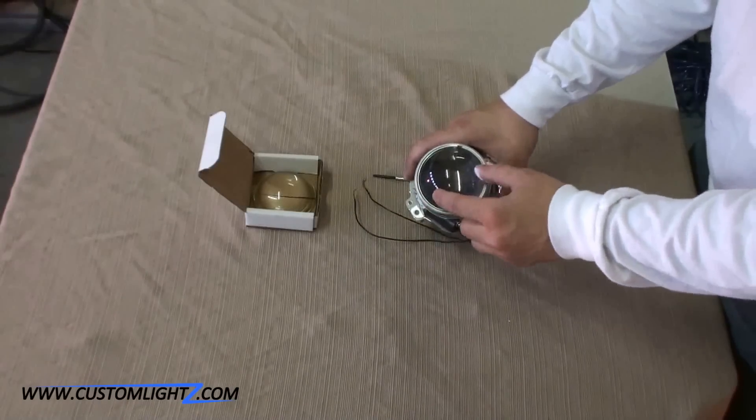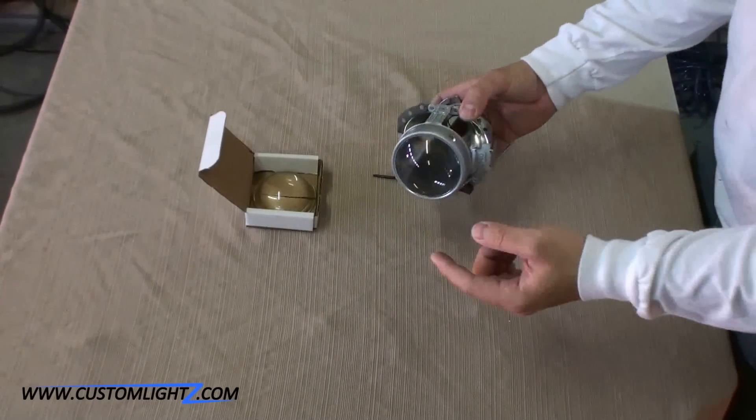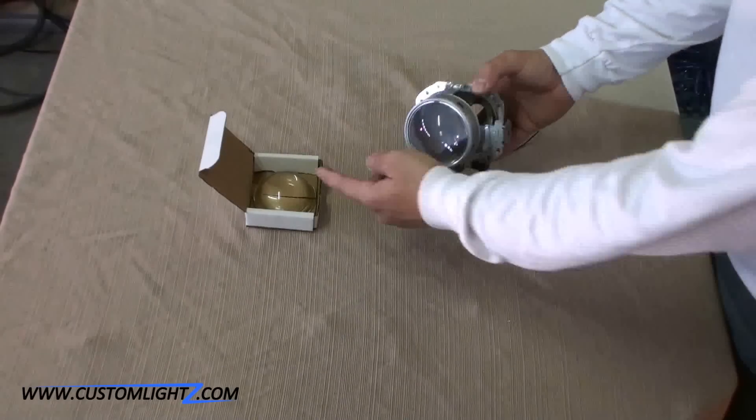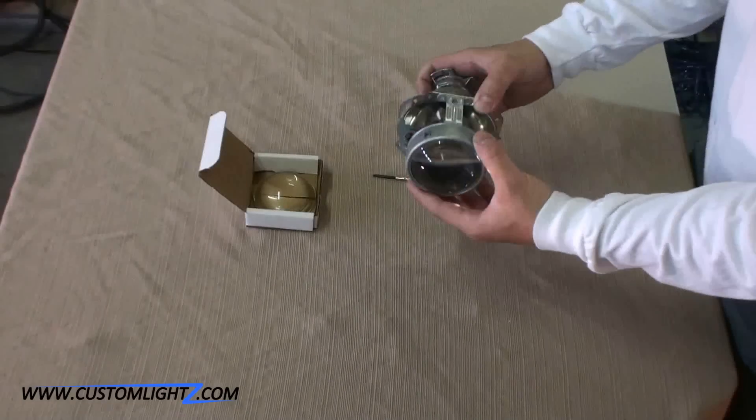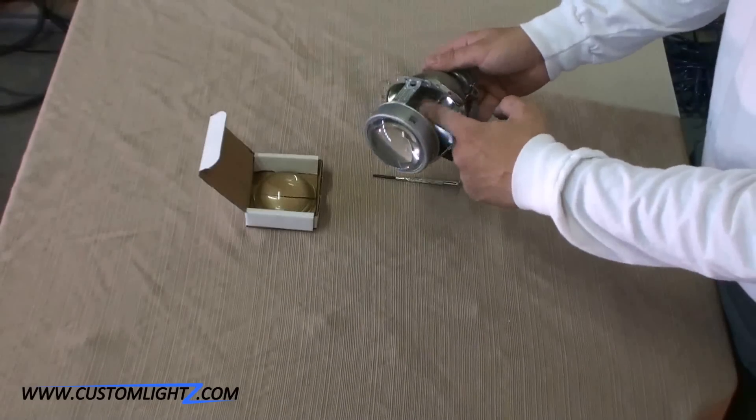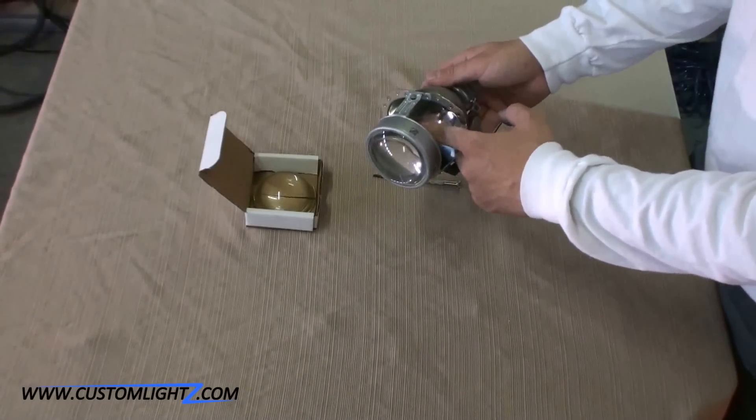This is a Fresnel lens. So in order to do this cutoff modification, we need to do two things: swap out the lens itself for a clear lens. In this case we got a ZKW clear lens or actually a replica. And then the second thing would be to gently bend the shield if we need to add more color.